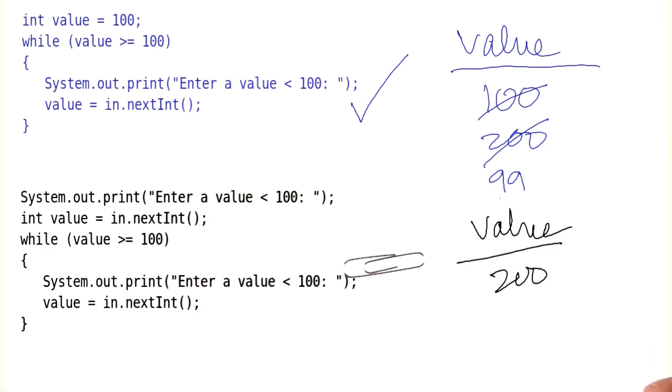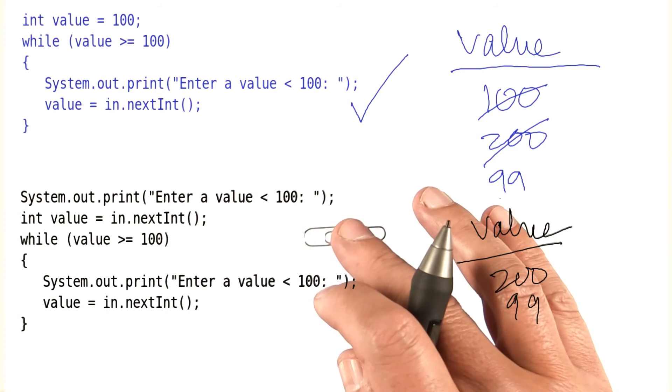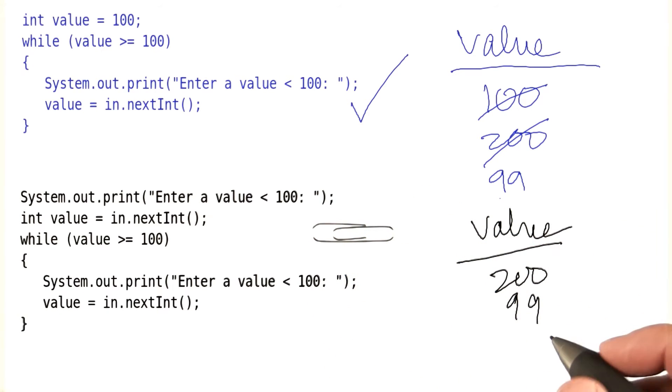So now we get into the loop and we ask the user again. Say now they give the right answer. Then we go back to the top, and now we're satisfied. So this also works.